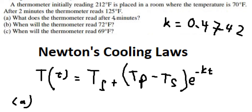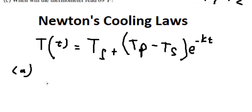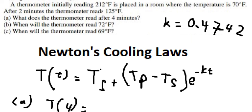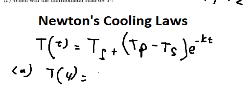What is the temperature after 4 minutes? So we have T of 4. And we have T_H, that's about 70, plus 212 minus 70.